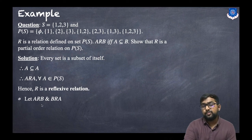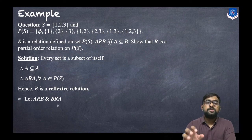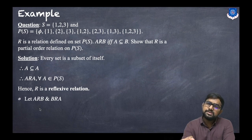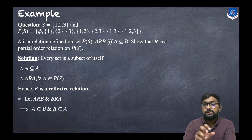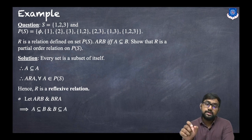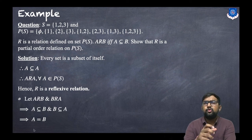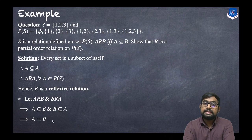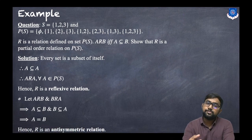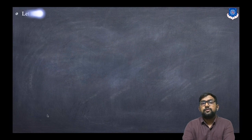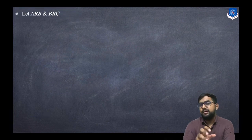For anti-symmetricity: if A is related to B and B is related to A, then A is a subset of B and B is a subset of A. By basic subset relations, if both are subsets of each other then both sets are the same. So A equals B. Hence it is an anti-symmetric relation.